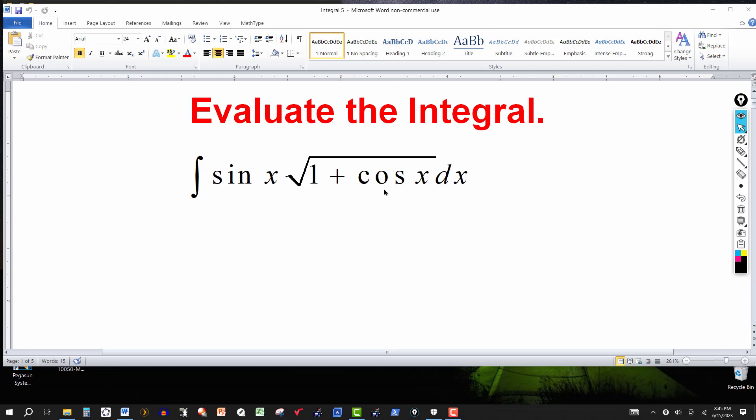So we know the derivative of cosine is minus sine, so this calls for another u substitution. And there could be several options on the u substitution, but it appears in this one that if we let u equal to 1 plus cosine of x, this should work. So that's the substitution.